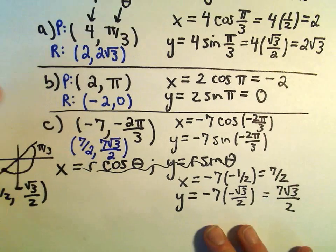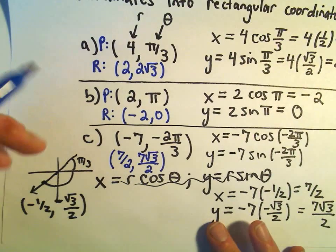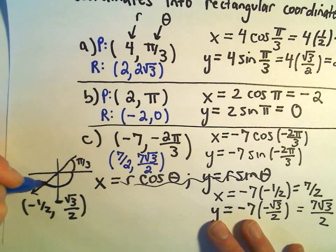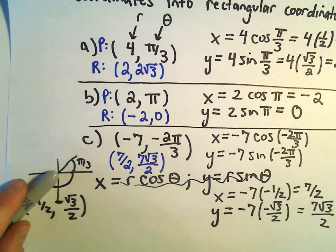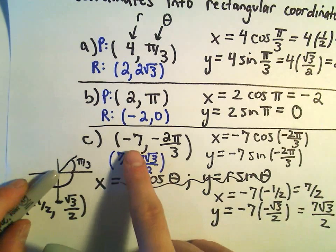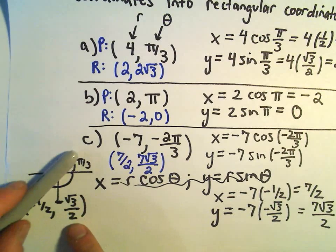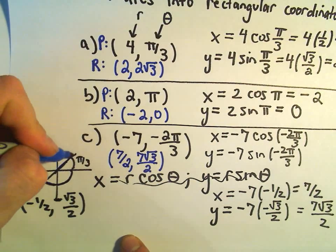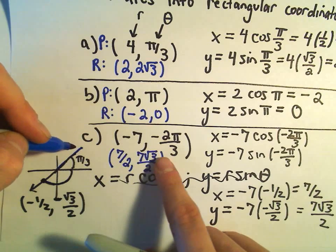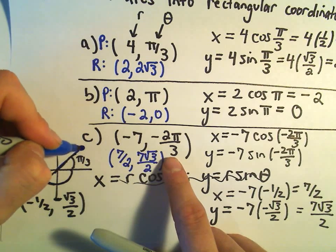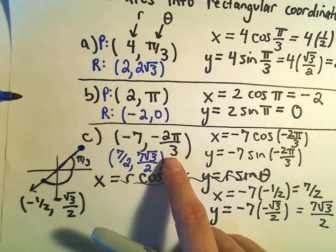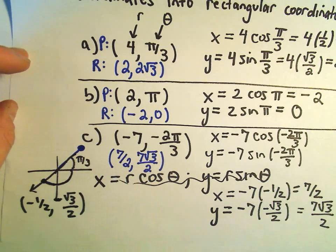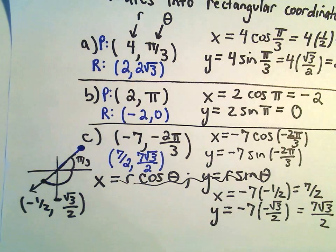With the last example, remember negative 2 pi over 3 definitely puts us down here in quadrant 3. But when we actually apply our r-value, since it's negative, that's going to reflect back into the first quadrant. So (-7, -2π/3) would be somewhere in the first quadrant, and that's in fact what we're getting after we convert it back into our rectangular coordinates.